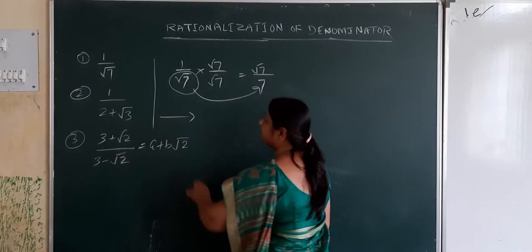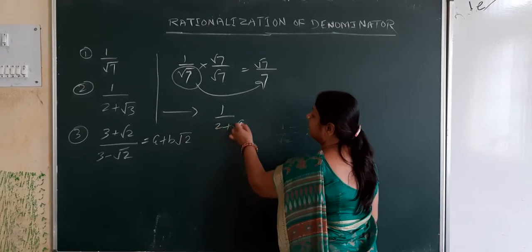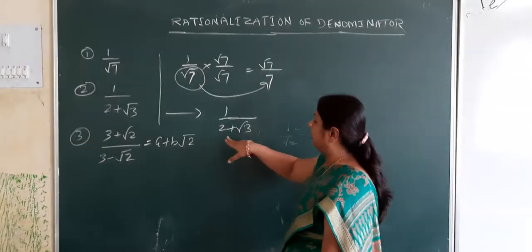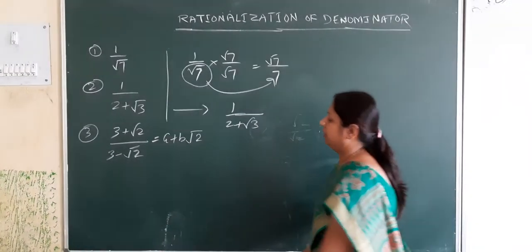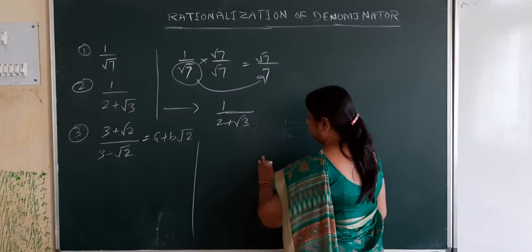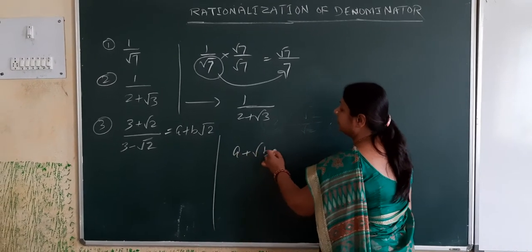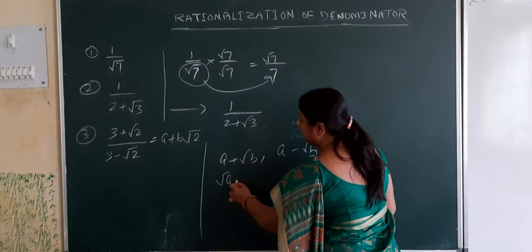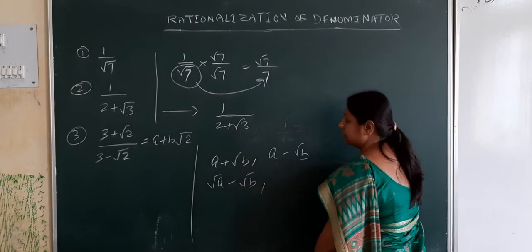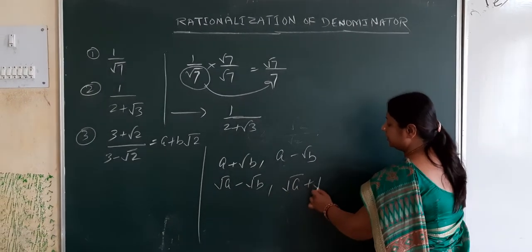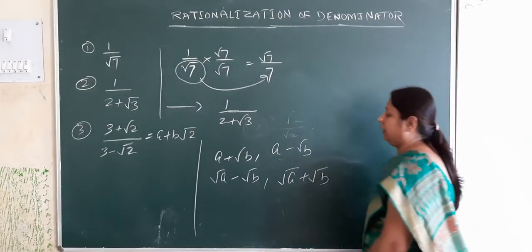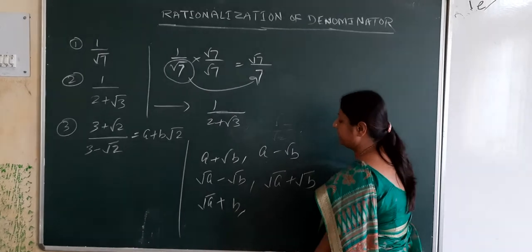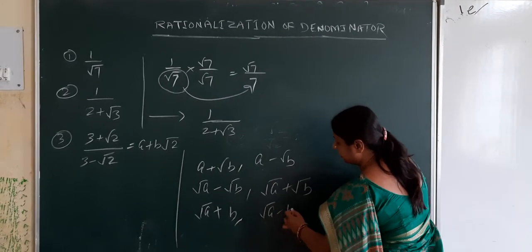Now consider another example: 1 by (2 plus root 3). Here the denominator has two terms. Remember: if a number is (a plus root b), its rationalizing factor will be (a minus root b). If a number is (root a minus root b), its rationalizing factor will be (root a plus root b). Similarly, if a number is (root a plus root b), its rationalizing factor will be (root a minus root b).